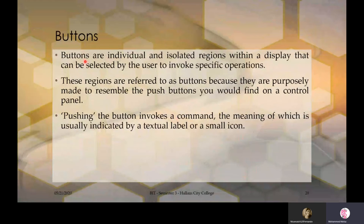The main WIMP components — Windows, Icon, Menu, Pointer — have been discussed. Now what are the other supportive components that support this interaction? Buttons are individual and isolated regions within a display that can be selected by the user to invoke specific operations. These regions are called buttons because they are purposely made to resemble push buttons on a control panel. Pushing the button invokes a command, the meaning of which is usually indicated by a textual label or a small icon.